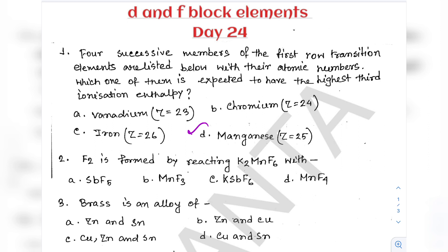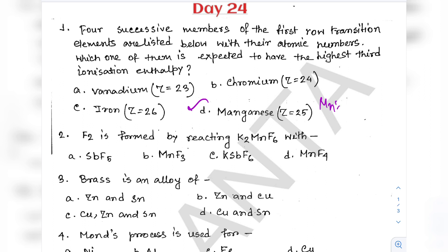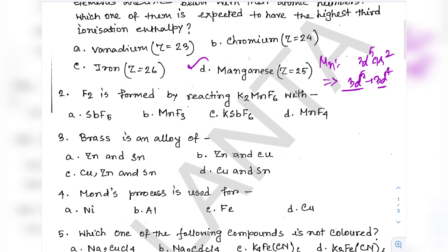The electronic configuration of manganese has outermost 3d5 and 4s2. Third ionization potential means going from 3d5 to 3d4. Since 3d5 is highly stable (half-filled) and 3d4 is unstable, this conversion from stable to unstable has very low tendency. Very high energy is needed to conduct the process, so the third ionization enthalpy of manganese will be the highest.